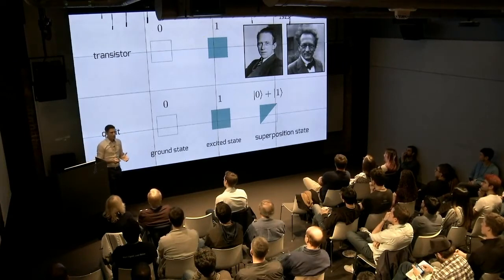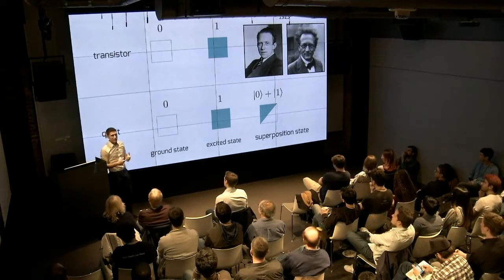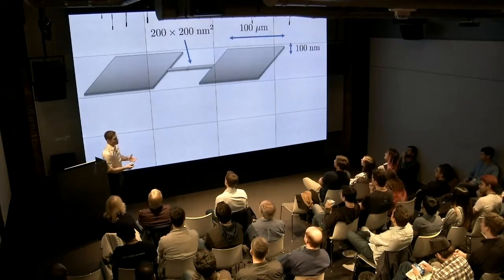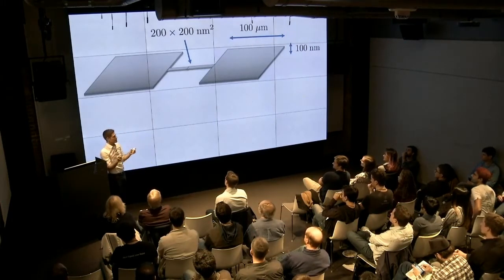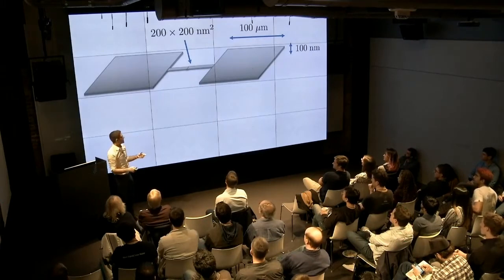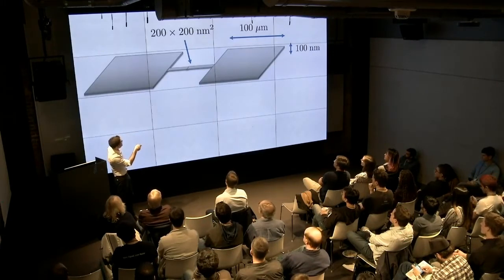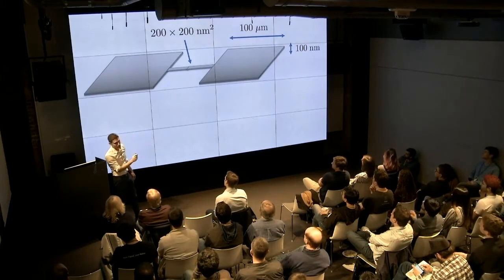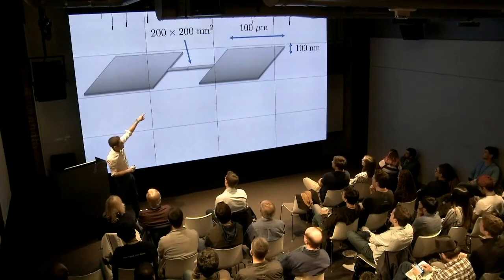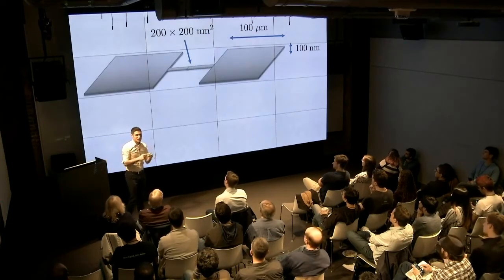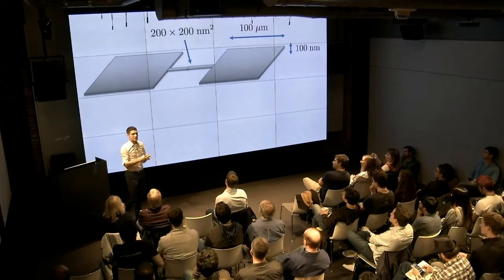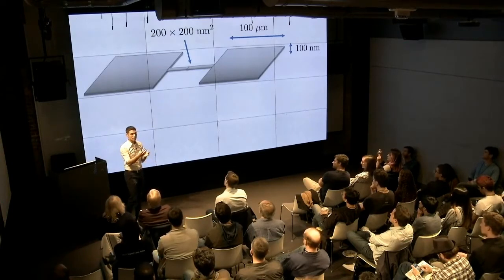So how do you build a qubit? You can build a qubit in many different ways. At Rigetti, our qubits are basically two pieces of aluminum touching each other. The dimension of each pad is approximately 100 microns by 100 microns, and the thickness is approximately 100 nanometers. The overlapping area at the junction is just 200 nanometers. These pieces of aluminum are placed on top of silicon — that is how you build a qubit. I'll show you some pictures later.